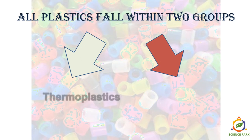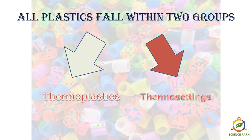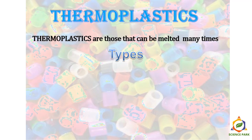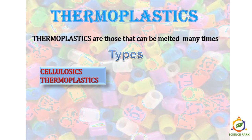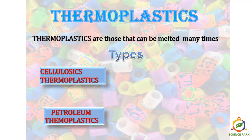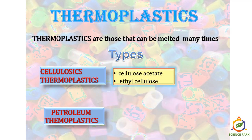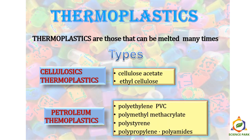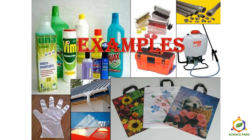All plastics fall within two groups: thermoplastics and thermosettings. Thermoplastics are those which can be melted many times. There are two major types: cellulosic thermoplastics and petroleum thermoplastics. Cellulosic thermoplastics contain cellulose acetate or ethyl cellulose. Petroleum thermoplastics include polyethylene, polyvinyl carbonate, polymethyl methacrylate (PMMA), polystyrene (PS), polypropylene, and polyamides — all examples of plastics we use daily.